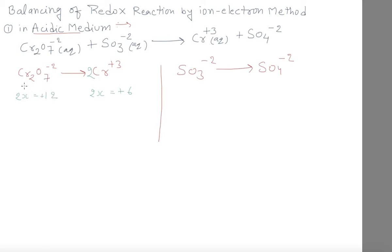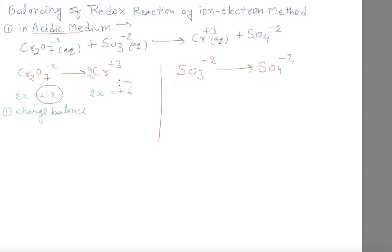Now our first rule is charge balance — meaning how many electrons are lost. In this reaction, chromium is giving plus 12 on one side and plus 6 on the other. Whichever side has the greater positive number, that many electrons are lost by that part. Here it is plus 12 and here is plus 6, meaning 6 electrons we have to add.